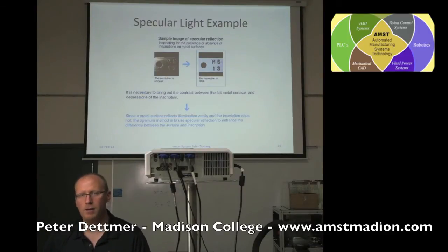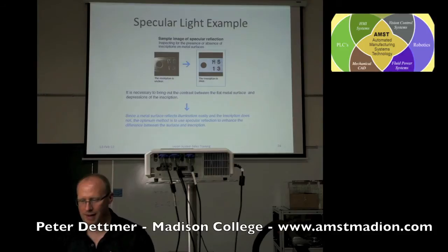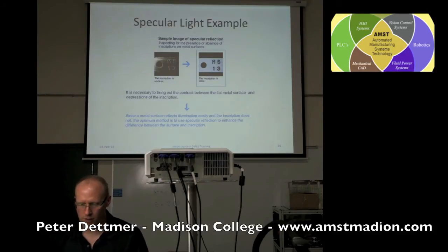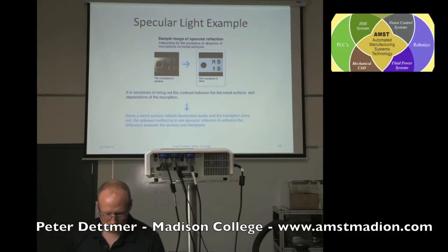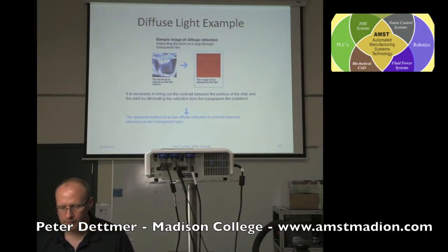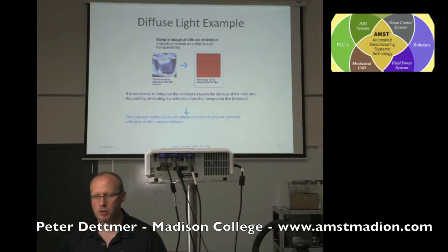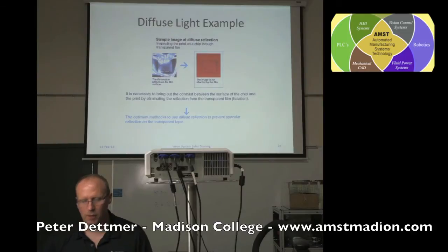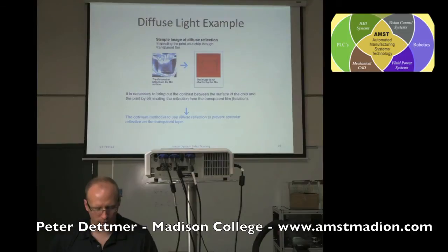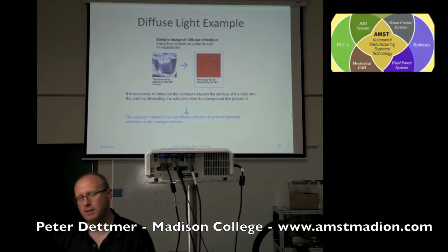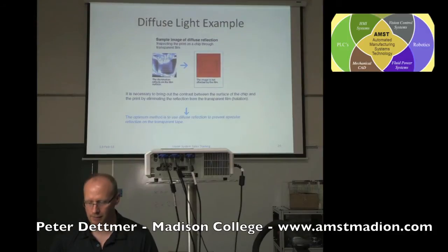The background of the metal looks almost white, with a nice outline of the round hole, and the numbers stand out much better. Here's some diffuse lighting of a microchip inside a plastic bag. We can see through the plastic bag, through the film, by using diffuse lighting, and identify and verify the part that's inside the bag.